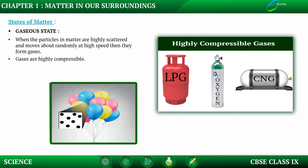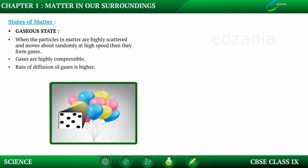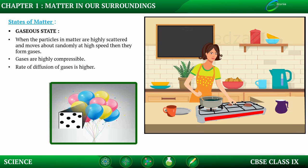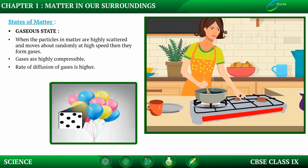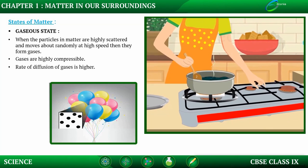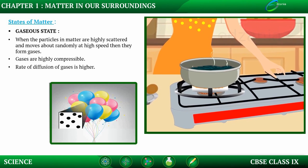Examples of highly compressible gases include LPG (liquefied petroleum gas) used at home for cooking, which is compressed and filled in cylinders. Similarly, oxygen supplied in hospitals and CNG (compressed natural gas) used as fuel are examples of the highly compressible nature of gases. The rate of diffusion of gases is higher — gases diffuse at a higher rate. In daily life, you must have observed that you come to know about a dish being cooked at a certain distance, due to particles of the aroma of food mixed with air reaching your nostrils.